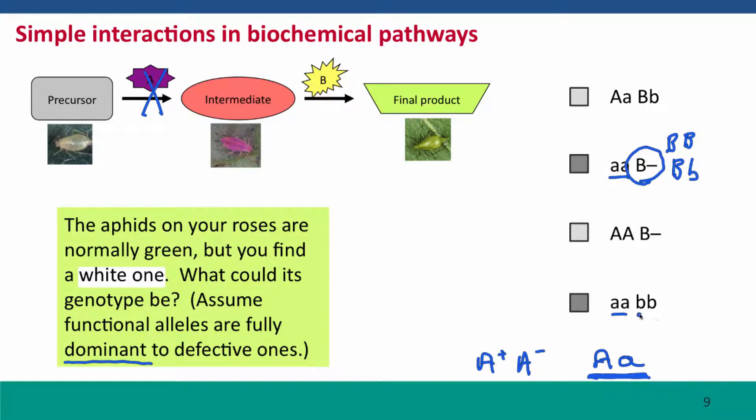Or the individual could be completely defective at both loci. We can't tell if there's a functional B locus, B allele present because there's no functional A allele present.